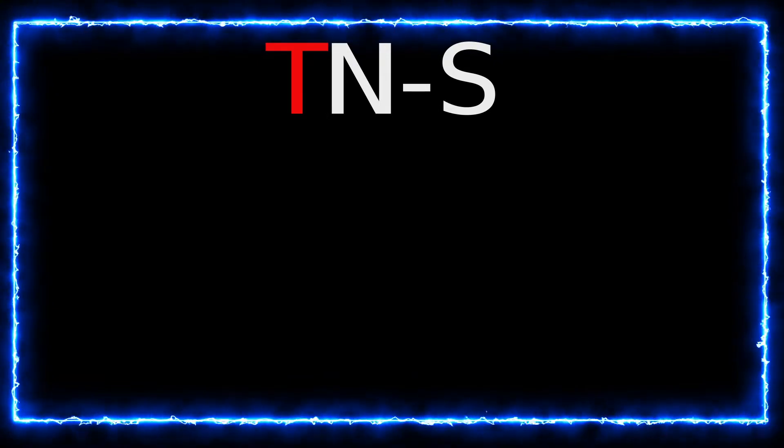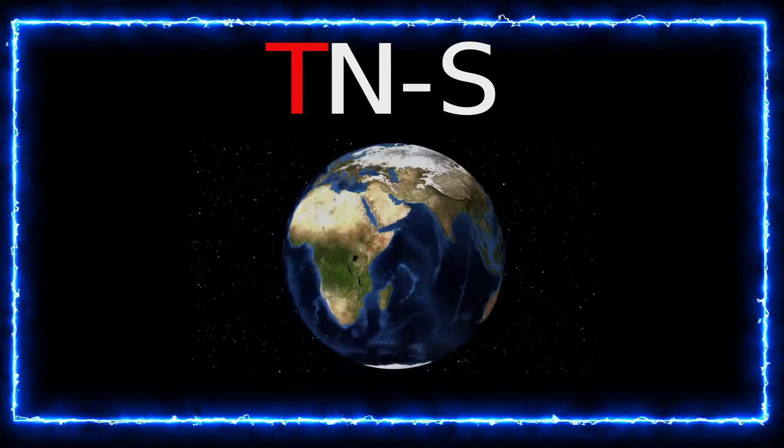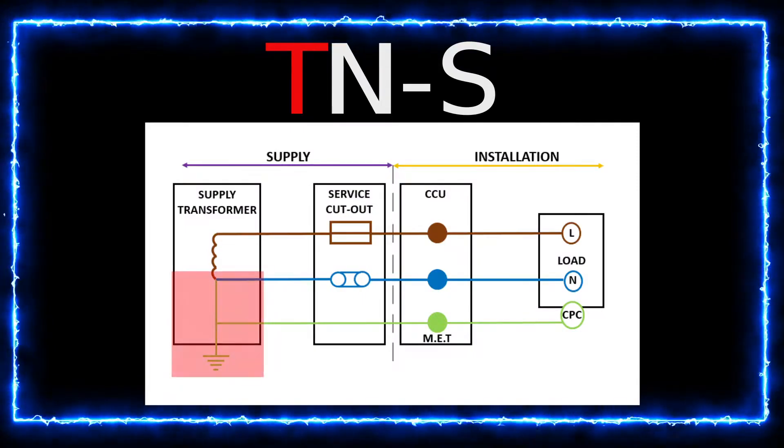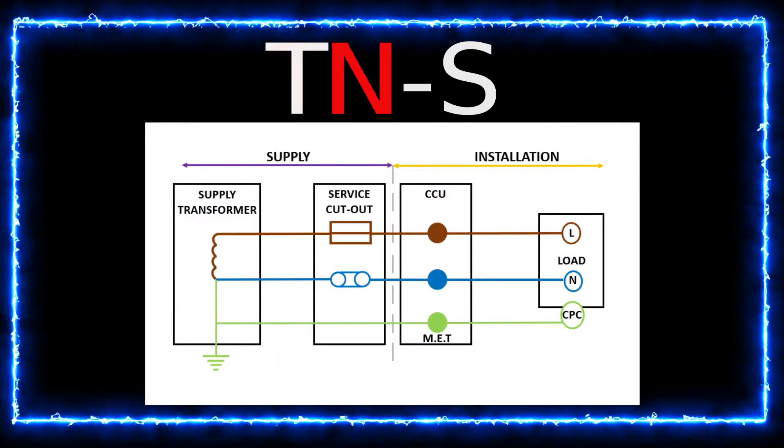The T stands for terre, which is French for earth, and what this tells us is that the supply transformer has a connection to earth. N stands for neutral.